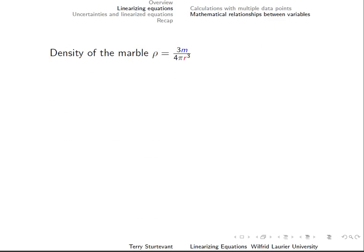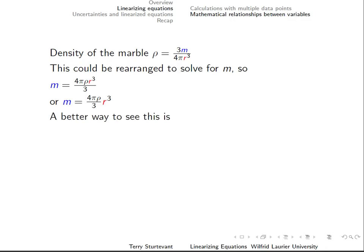From the example of the density of a marble, the original equation has two variables, mass and radius, and four constants: 3, 4, pi, and the density. We can rearrange this to get one variable on the left side of the equation.